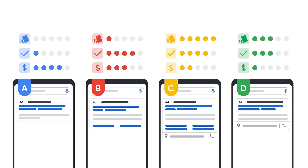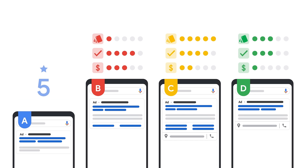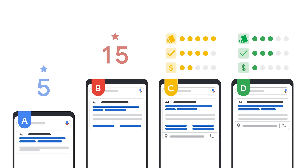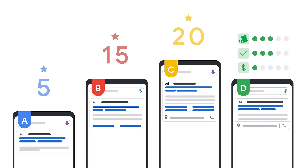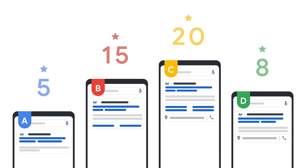The system uses these three components to calculate the ad rank. In this example, Advertiser A's ad rank is calculated as 5, Advertiser B's ad rank is calculated as 15, Advertiser C's is 20, and Advertiser D's is 8. This ad rank score determines the ad position in the search page results.